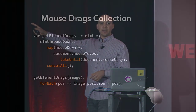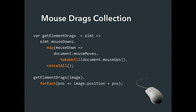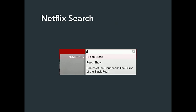Now we understand how that mouse drags collection works — I've taken events and composed them declaratively together to create a new and more complex event. Observable can also combine events, asynchronous requests, and animations.